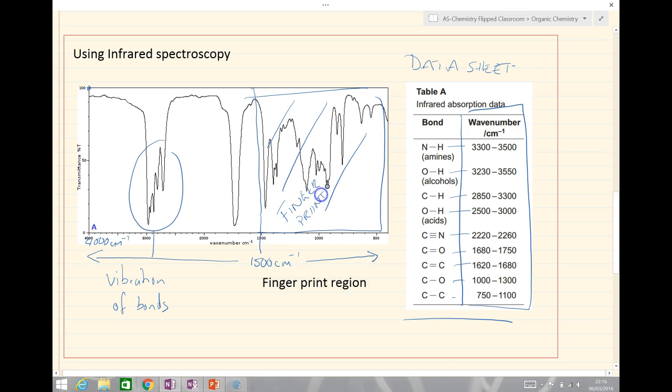The reason we call it the fingerprint region is we can't identify exactly what bonds these absorptions are related to. However, if we compare one molecule with a database of molecules and find that same molecule in our database, they would have the same fingerprint region. So it's a way of comparing molecules and double checking. If I thought I had propanone, I could compare that fingerprint region with another propanone molecule and they would be the same.